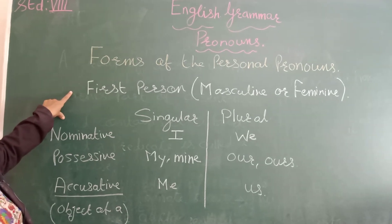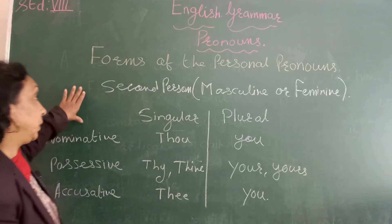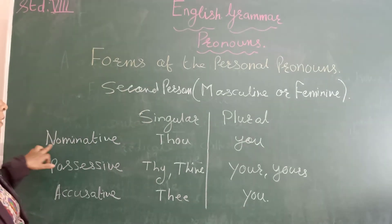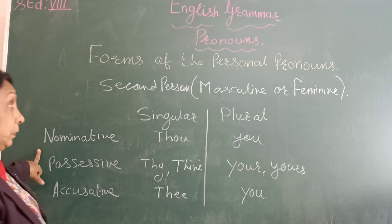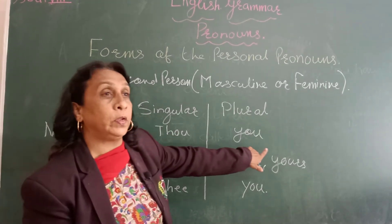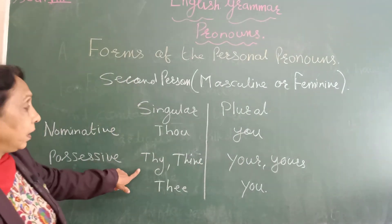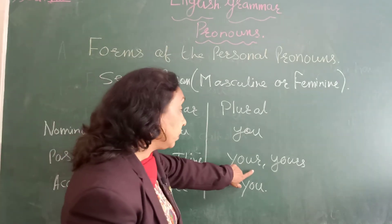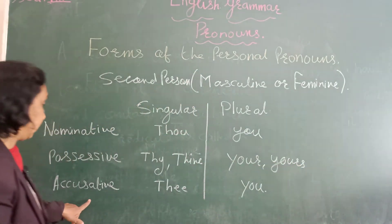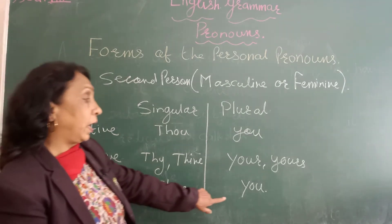The second person means the person spoken to. In the nominative case, in singular form we use 'thou' and the plural form we use 'you'. In the possessive case we use 'thy' and 'thine', and in the plural form we use 'your' or 'yours'. In the accusative form we use 'thee' for singular.